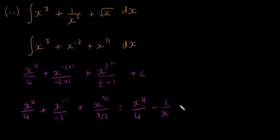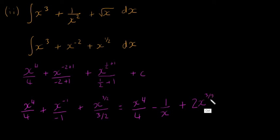This last term is going to be a little tricky as well. We have x to the power of 3 over 2 divided by 3 over 2. When you have a fraction divided by a fraction, instead of saying x divided by 3 over 2, it flips to give 2x to the power of 3 over 2 over 3. That's because you're dividing by a fraction — covered in the algebra videos on algebraic fractions. So that's your answer, and don't forget the plus c.